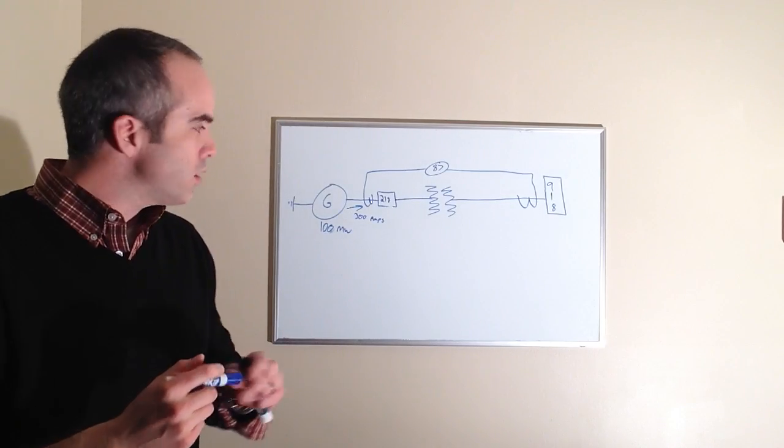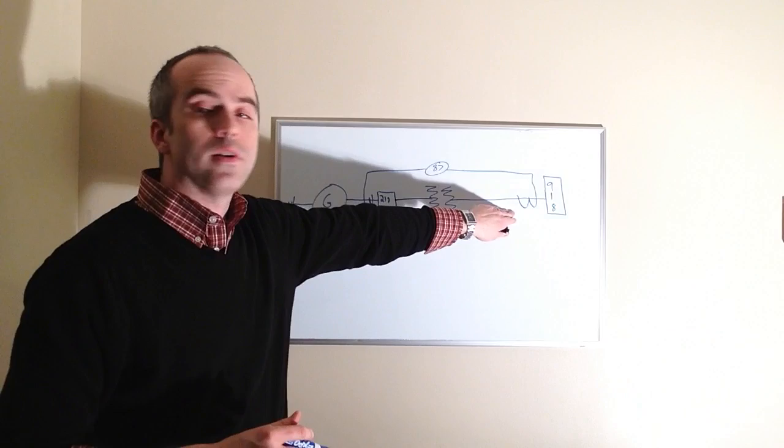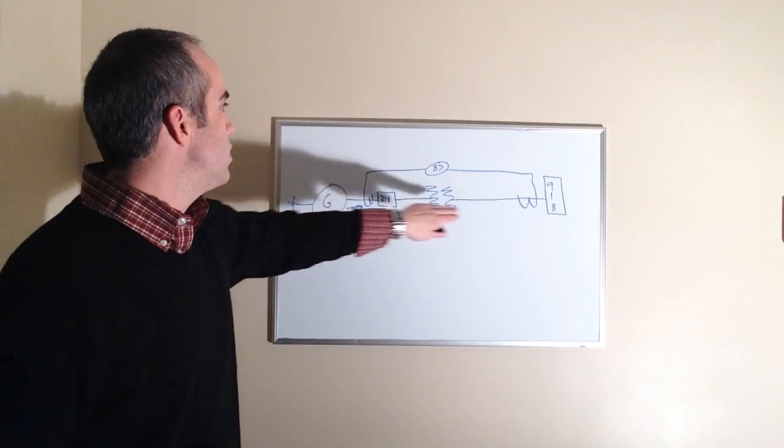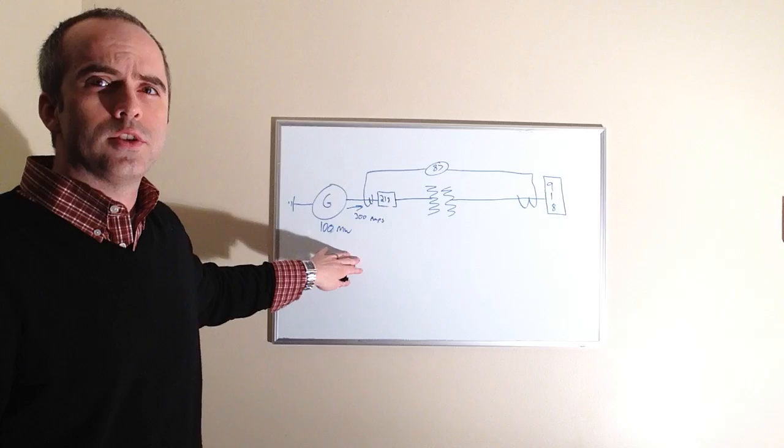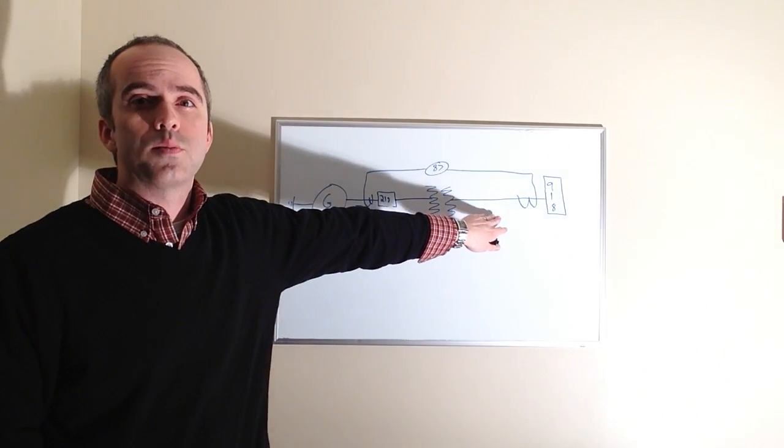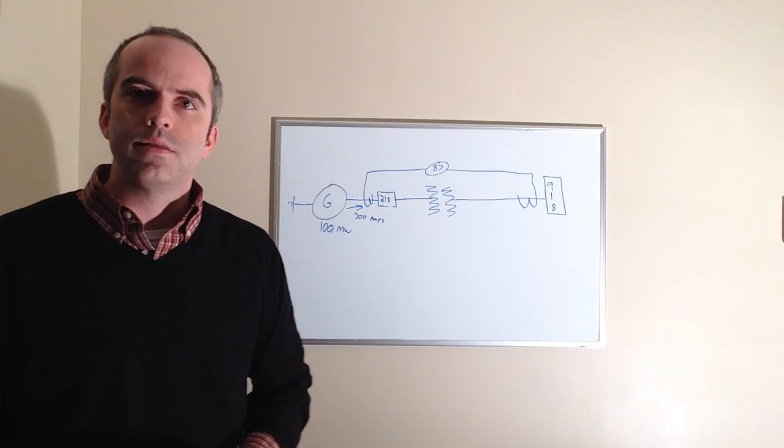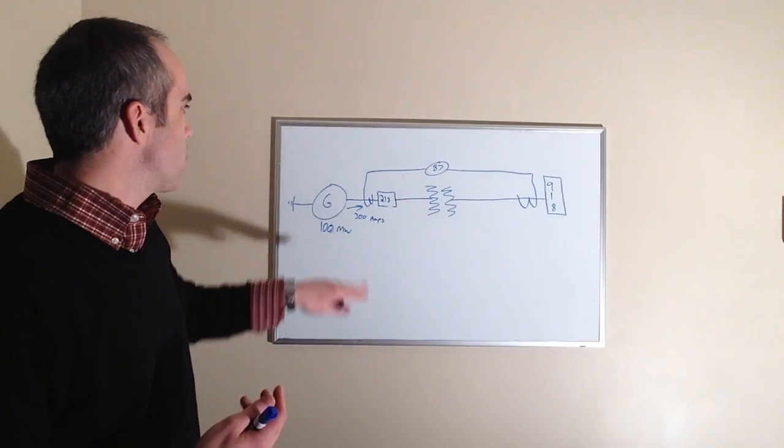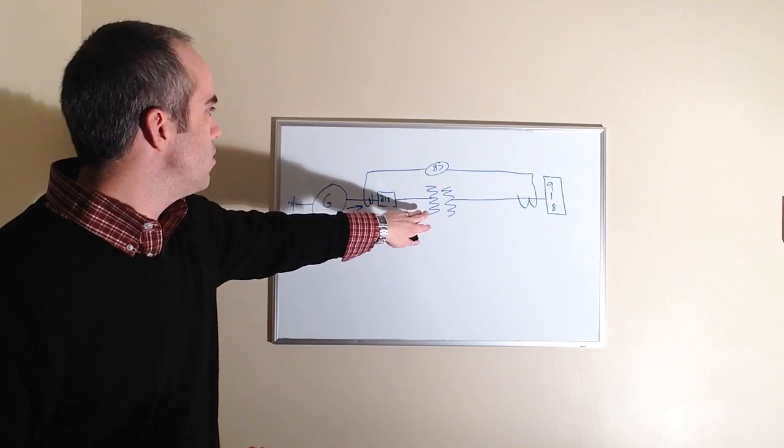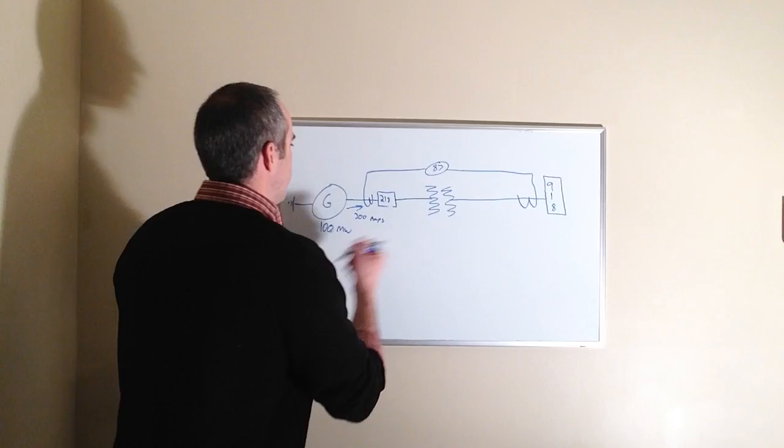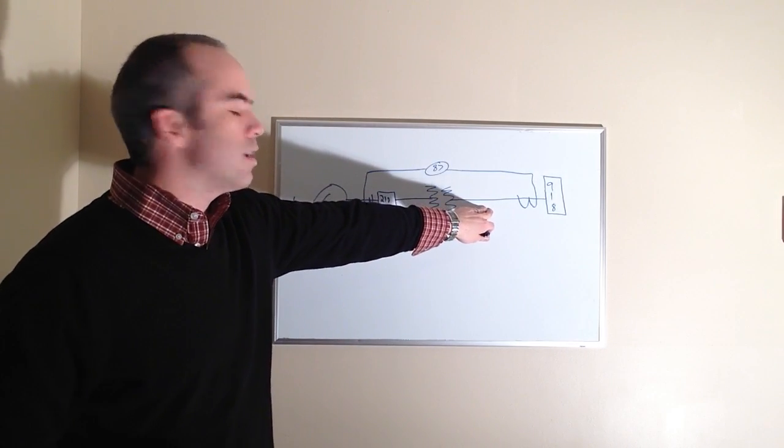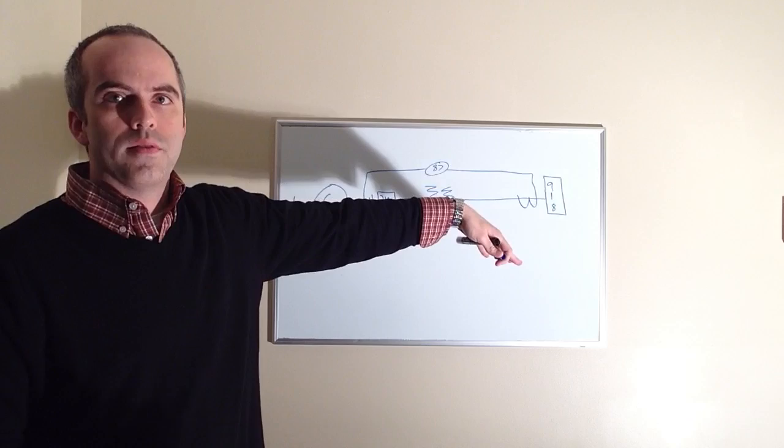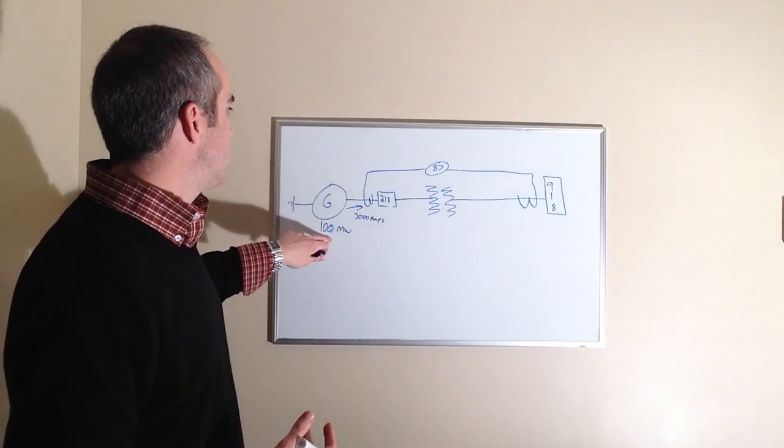Now one thing to understand is that we're going to use the same amp value here and here only for understanding purposes. In reality, the amp flow is going to be different here than it is here. If we have a hundred megawatts coming out of the generator going through the transformer, this side of the transformer is also going to have a hundred megawatts. But we know that if we look at basic Ohm's law, which is power equals E times I, voltage times current, the power being the megawatts. We know that the voltage is lower here, so we're going to have a higher current value.